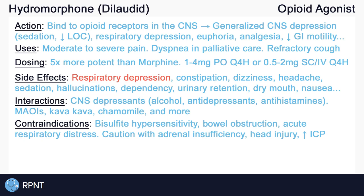Avoid use in clients with a GI or bowel obstruction, as well as in clients with acute or severe respiratory distress, such as an untreated asthma attack. Opioids have been linked to adrenocortical insufficiency, so caution should be exercised in clients who already have adrenal insufficiency. Caution should also be used in clients with head injuries or increased intracranial pressure — especially monitor for sedation and respiratory depression in these clients.